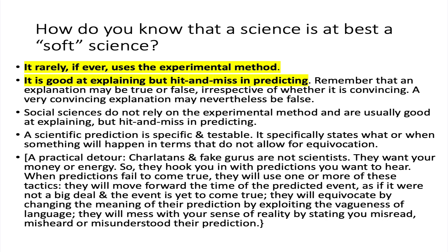Here is an important practical side note. Charlatans and fake gurus are not scientists — they just want your money or energy. They hook you in with predictions you want to hear. When such predictions fail to come true, one tactic they use is to move forward the predicted time. Someone might say, 'By 2019, cars will drive themselves,' and when that doesn't happen, they'll say, 'Wait another 20 years — I was just a little too early.' They do this as if timing doesn't matter. It matters.